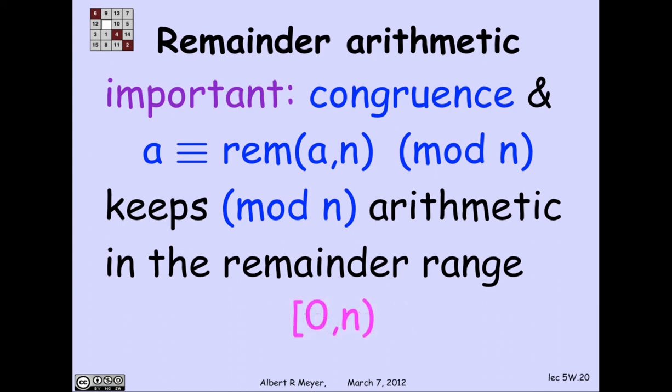And we use this standard closed open interval notation to mean the interval from 0 to n. So this is red, it's sometimes used in analysis to mean the real interval of reals, but we're always talking about integers. So this means the integers that square bracket means 0 is included, and round parenthesis means that n is excluded. So that's exactly a description of the integers that are greater than or equal to 0 and less than n.